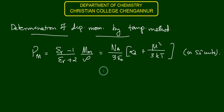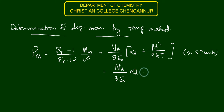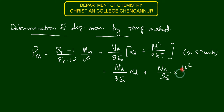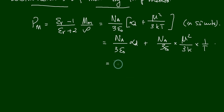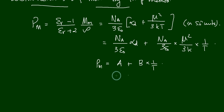If we rearrange this equation, we can write it as Na divided by 3ε₀ into αd, plus Na divided by 3ε₀ into μ² divided by 3k, into 1/T. We can write it as Pm equals a plus b into (1/T).